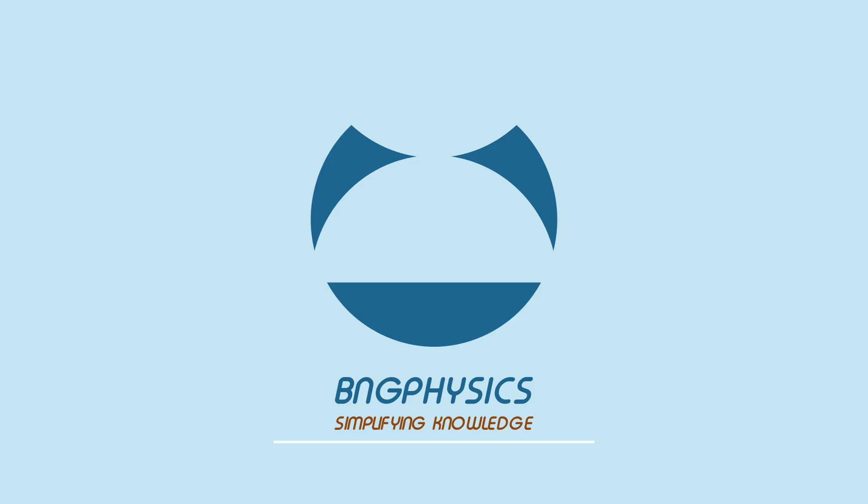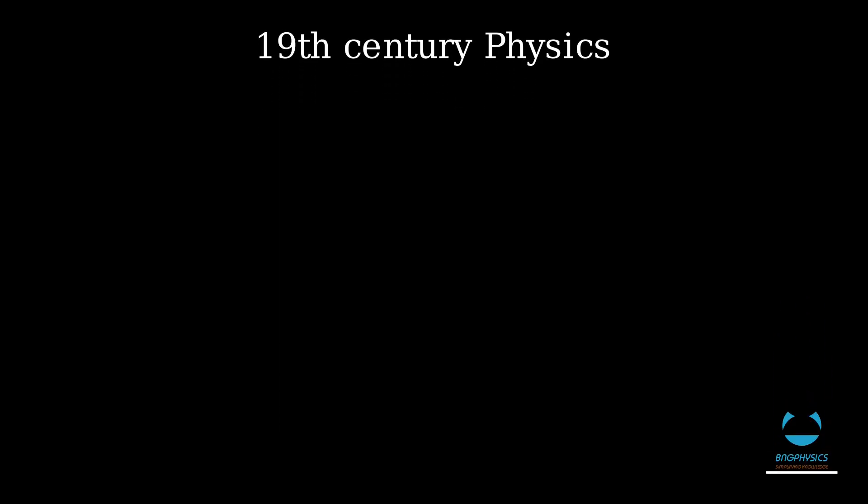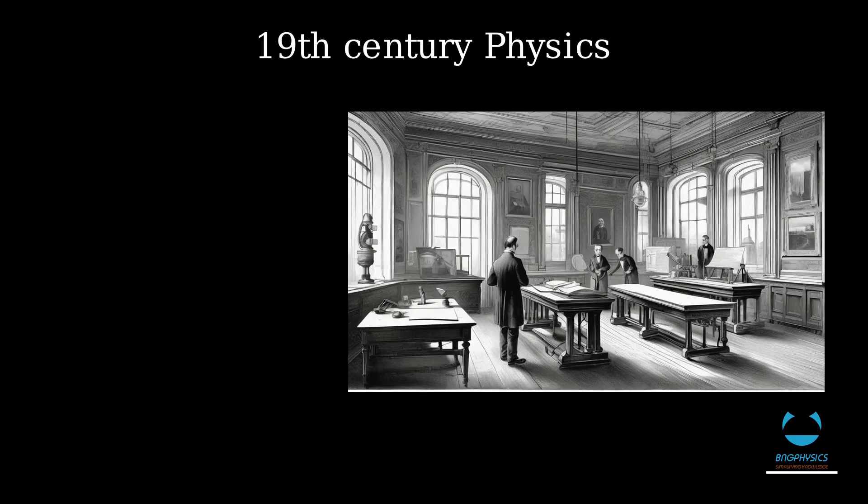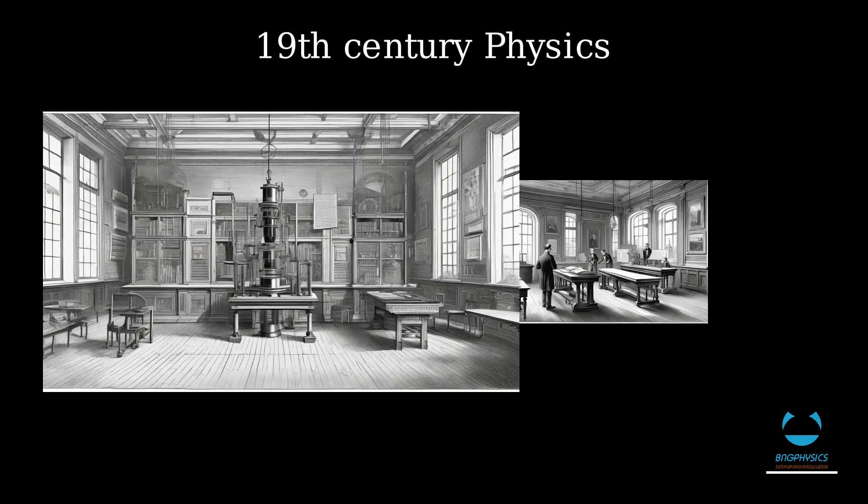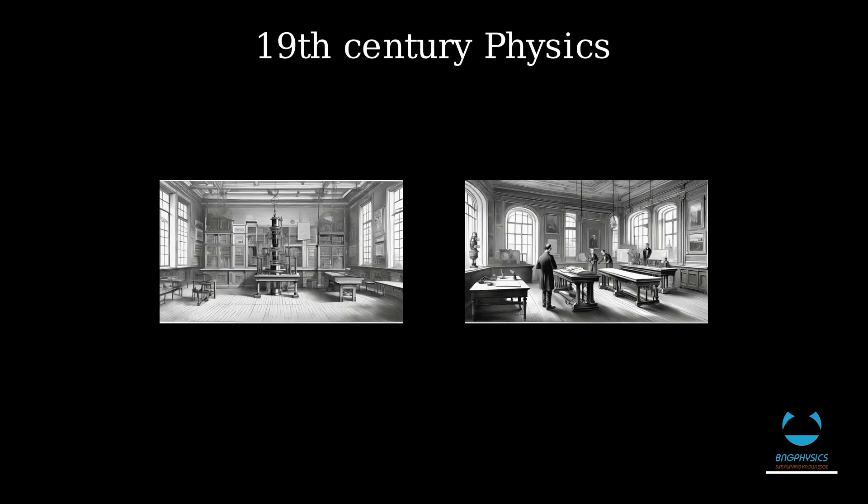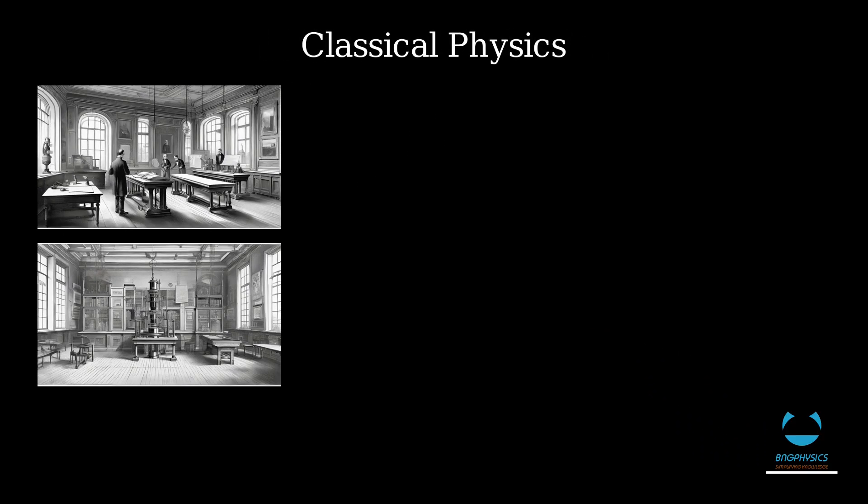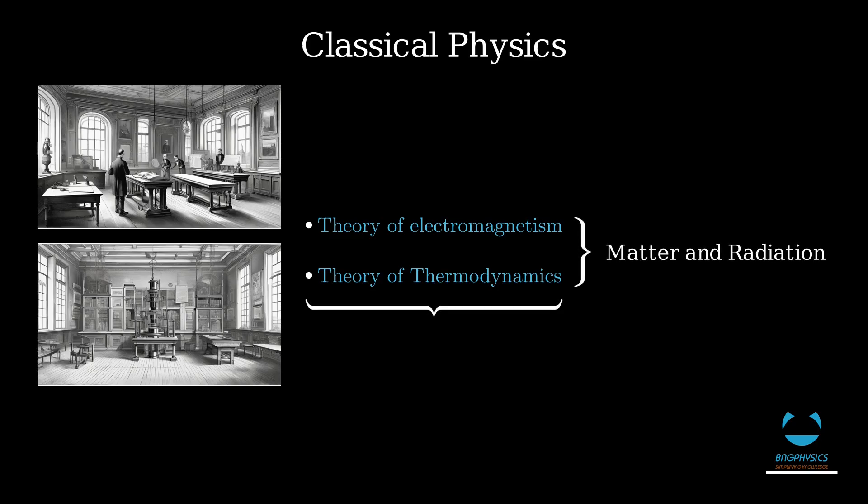At the end of the 19th century, physics consisted essentially of classical mechanics, including the theory of electromagnetism and thermodynamics, which convinced many people that the ideal description of nature had been reached. The theories of electromagnetism and thermodynamics could be used to explain all physical phenomena.